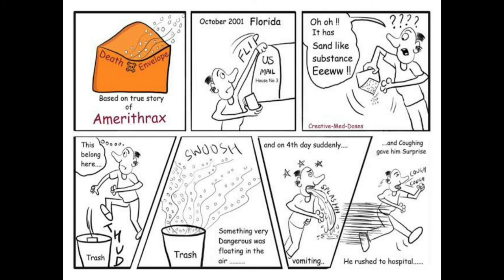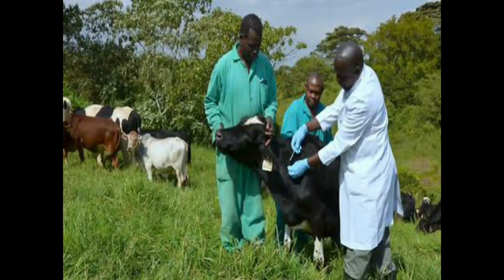In 2001, powdered anthrax spores were deliberately put into letters mailed through the U.S. postal system. Twenty-two people, including 12 mail handlers, got anthrax, and five of those 22 died. Vaccination of animals is the key to stopping the spread of anthrax in humans.